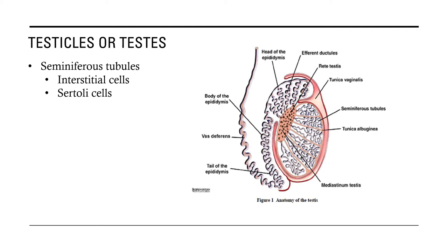For the testicle or testes, it is composed of the seminiferous tubule. This part contains different sperm cells — the spermatogonia, spermatocytes, spermatid, and spermatozoa. Also found here are the interstitial cells, or Leydig cells, that produce testosterone, and the Sertoli cells, also called nurse cells.